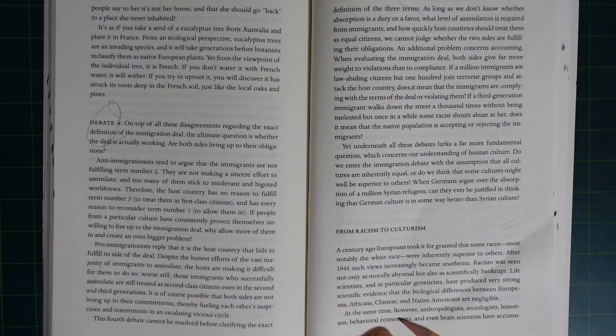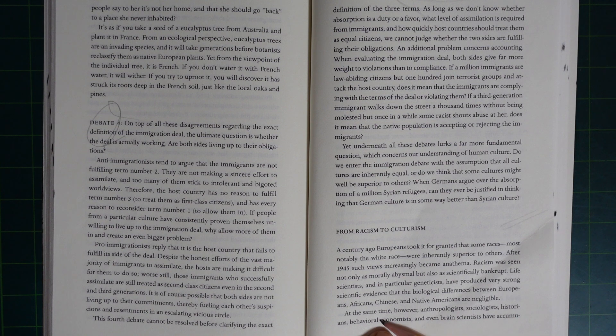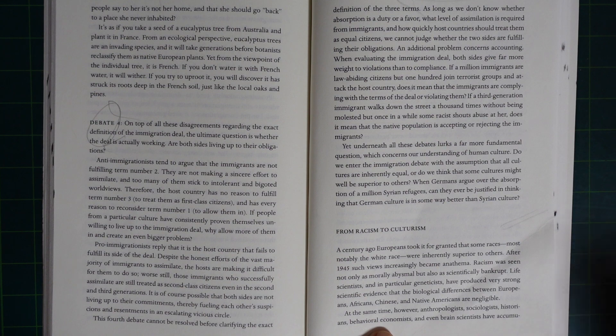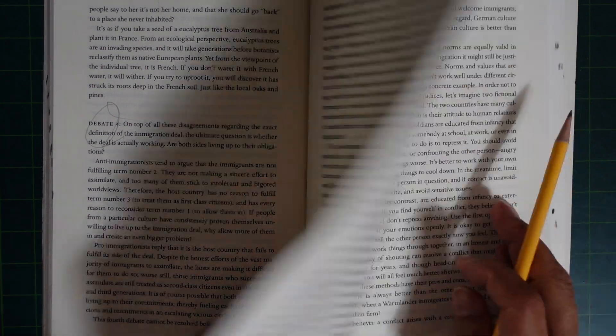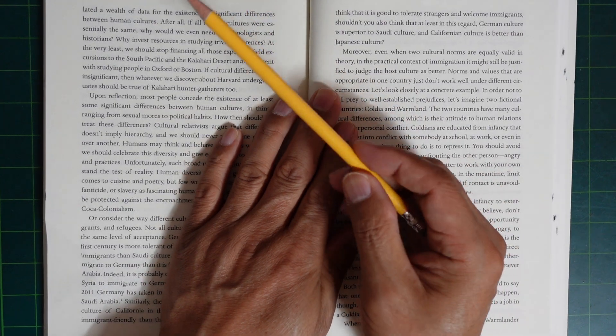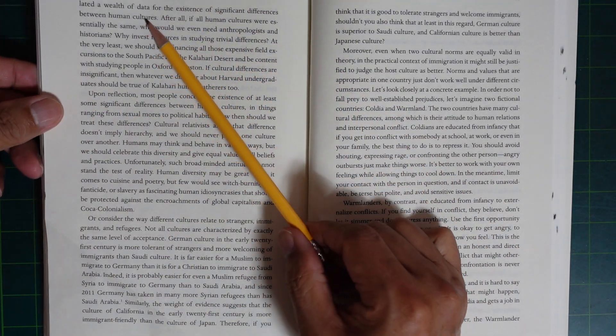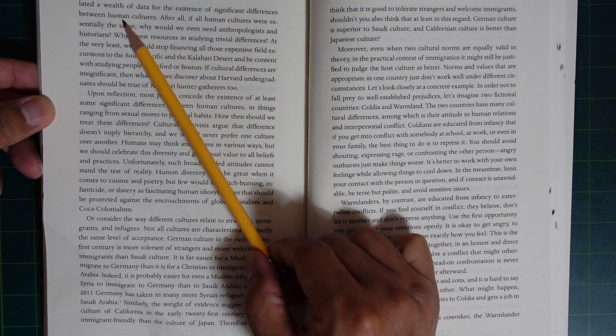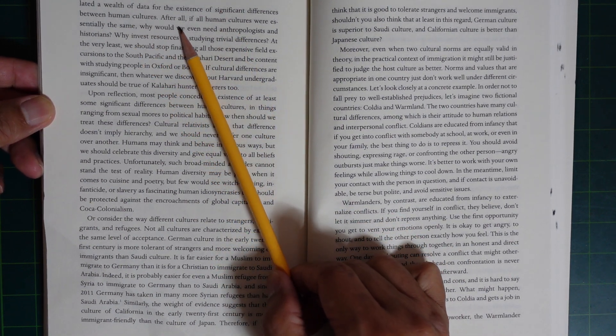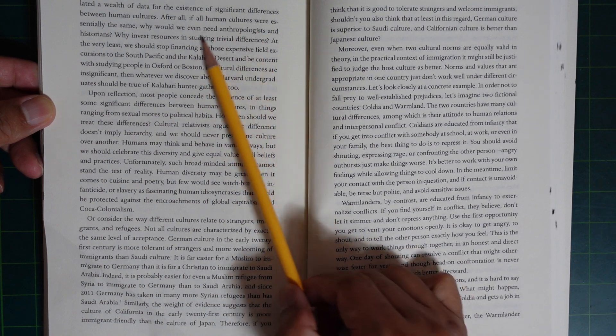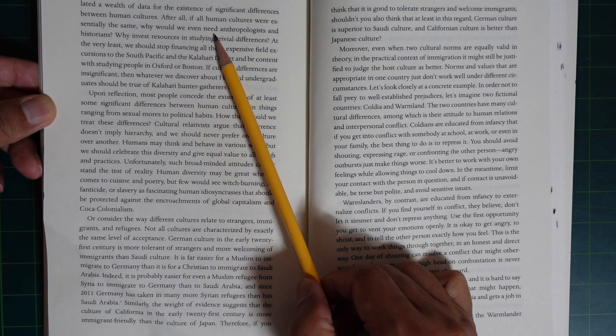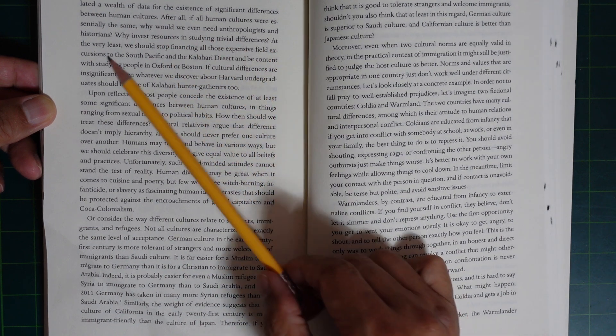At the same time however, anthropologists, sociologists, historians, behavioral economists, and even brain scientists have accumulated a wealth of data on the existence of significant differences between human cultures. After all, if all human cultures were essentially the same, why would we even need anthropologists and historians?